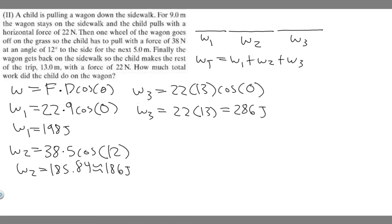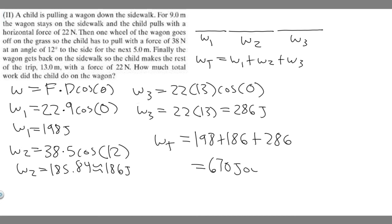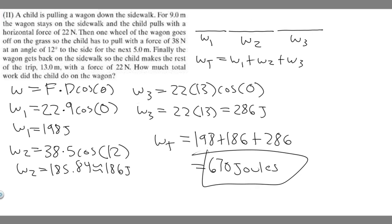Now we're trying to find the total work, so we just add them all up. W total equals 198 plus 186 plus 286, which gives you 670 joules. So that's your answer — we just added up the work for each of the three parts to get the total of 670 joules.